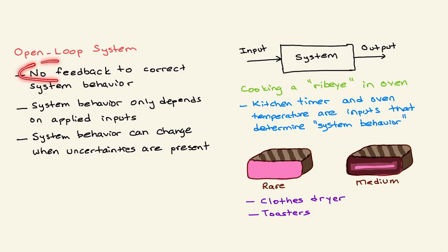To make it short, in an open-loop system there is no feedback. You set some inputs, you get your output, and this is what it is.